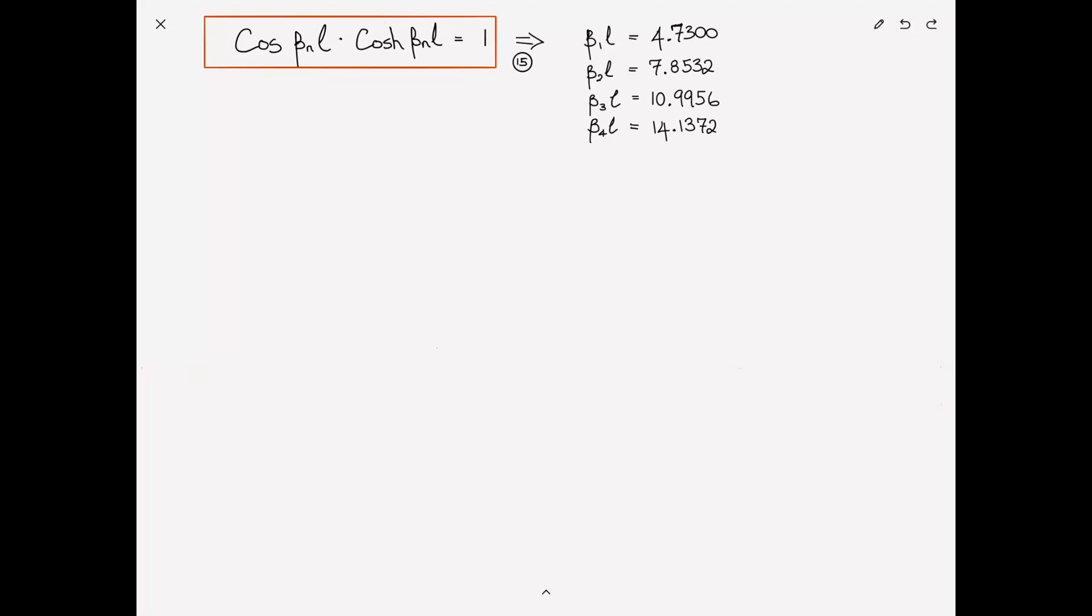Now, if we compare that to the case of the simply supported beam, let me put it up here. Do you remember what that is? The frequencies βₙL were actually multiples of π, π, 2π, 3π, 4π. So if we look at the fundamental frequency for the simply supported beam, we see that it's π, which is about 3.14. And the fundamental frequency of the clamped-clamped beam is 4.7. Does that make sense?